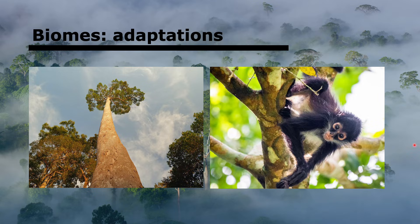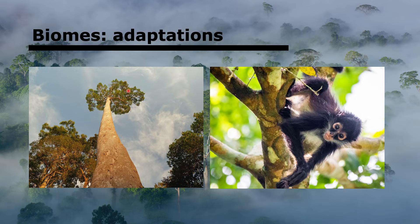Tropical rainforests have high temperatures, high precipitation, and very high light intensity. The meranti tree is adapted to grow over a hundred meters high to compete for light. It has a smooth trunk allowing it to shed rainwater very rapidly, oval leaves with pointed tips to shed water quickly, and evergreen leaves to take advantage of light all year round for photosynthesis.